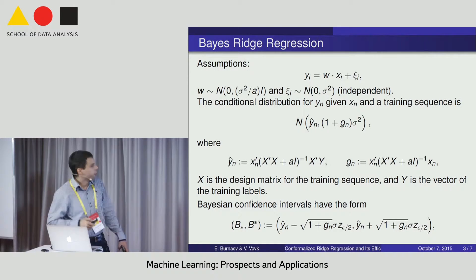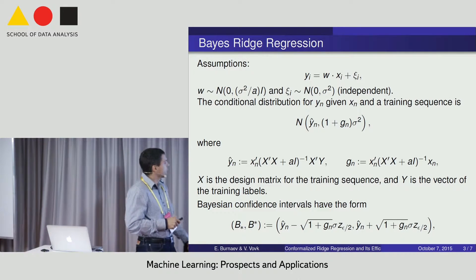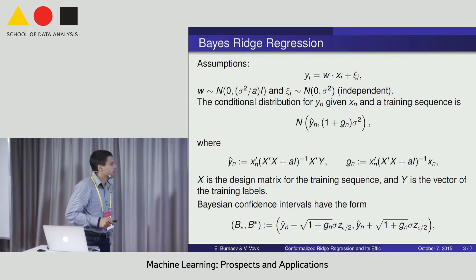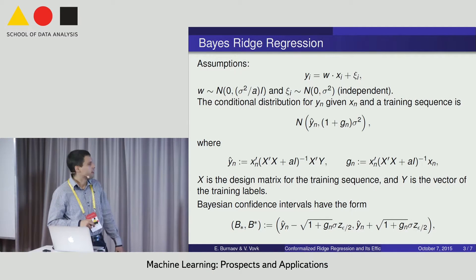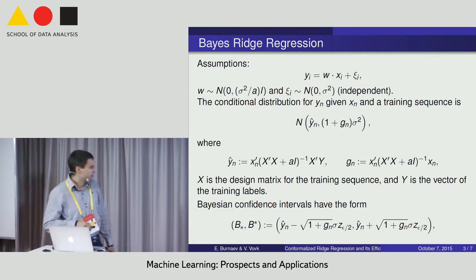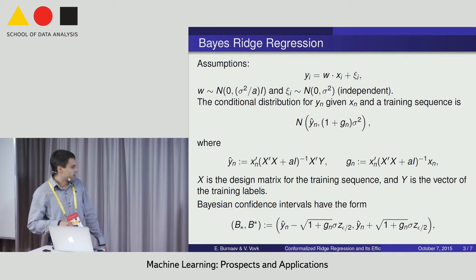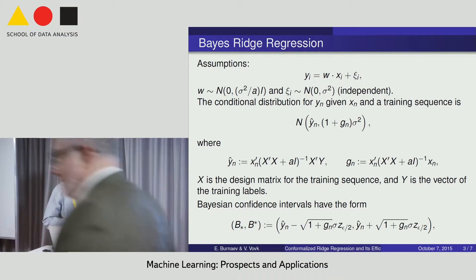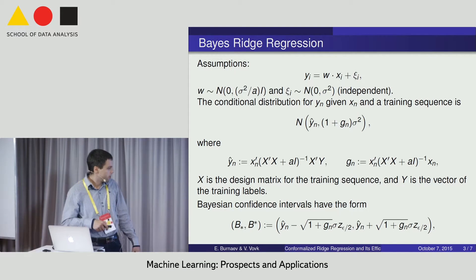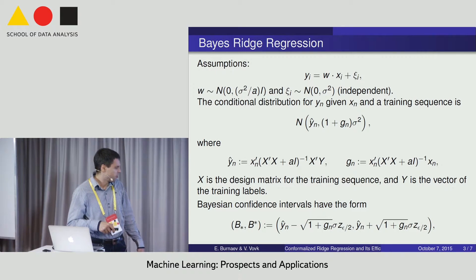So we have a Bayesian linear regression. Everybody knows that if we have a prior Bayesian assumption on the vector of parameters, then a Bayesian confidence interval could be constructed and looks like as follows.